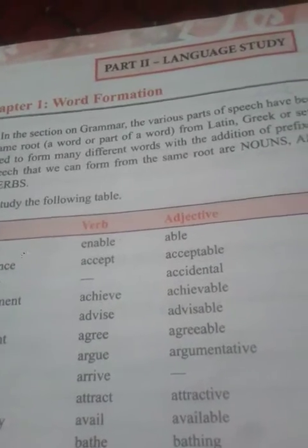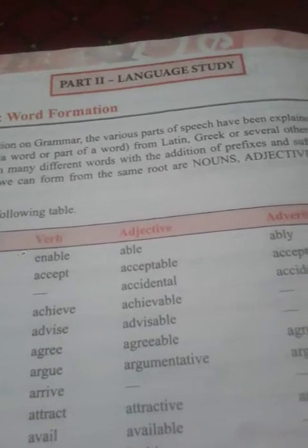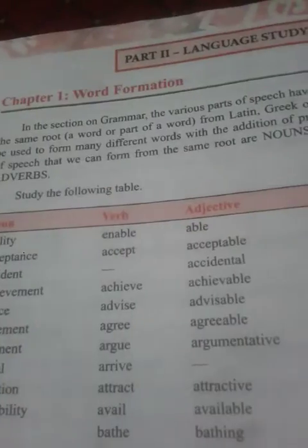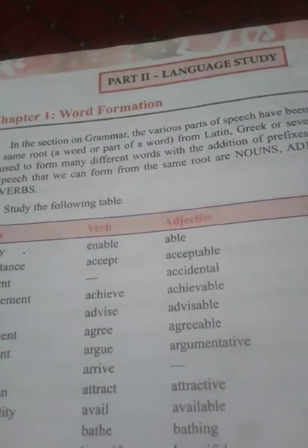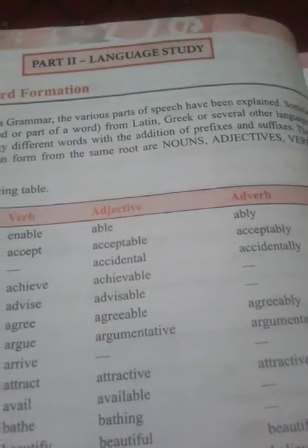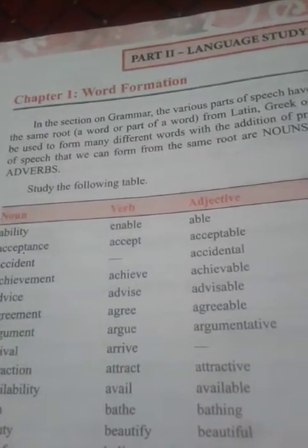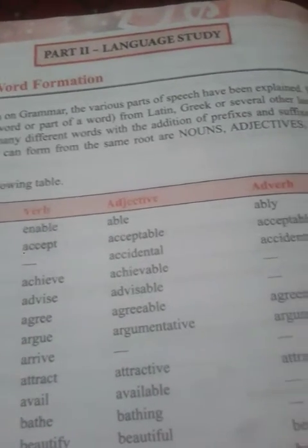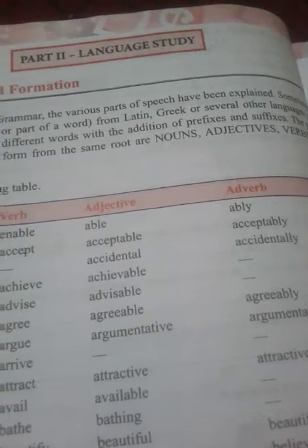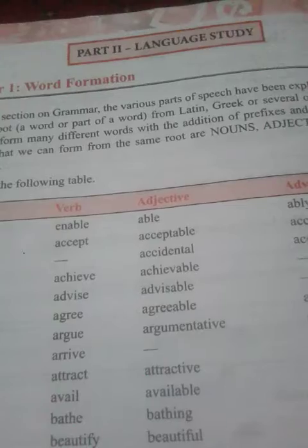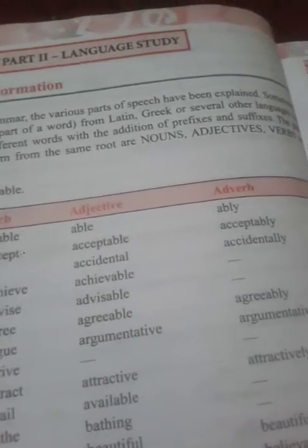In the section on grammar, the various parts of speech have been explained. Sometimes the same root of a word, or a part of a word from Latin, Greek, or several other languages, can be used to form many different words with the addition of prefixes and suffixes. The parts of speech that we can form from the same root are nouns, adjectives, verbs, and adverbs.